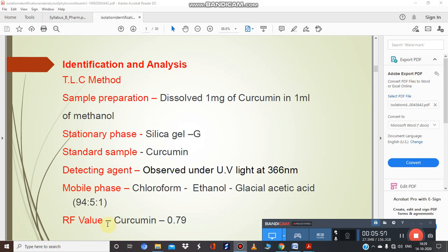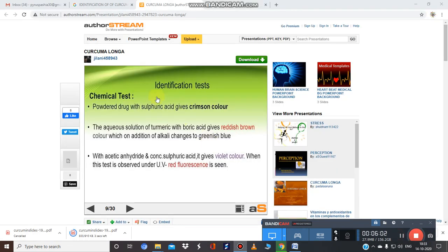There are some identification tests. Take powder drug and treat with sulfuric acid, it will give crimson color. This test is for the drug, not curcumin. When you treat aqueous solution of turmeric with boric acid it gives reddish brown color, which on addition of alkali changes to greenish blue. This is an identification test for turmeric.